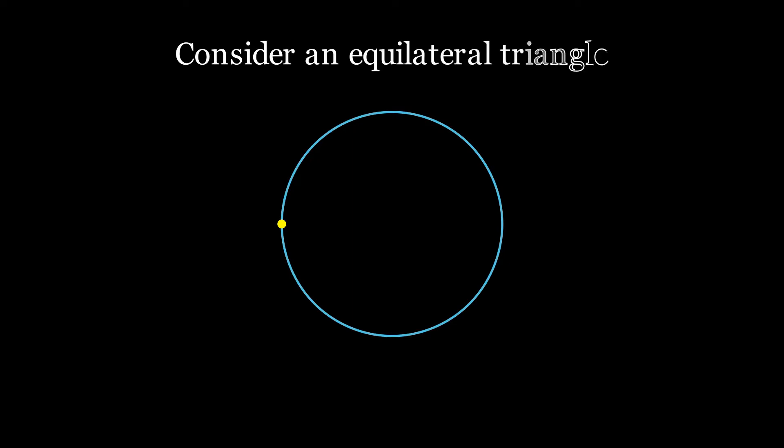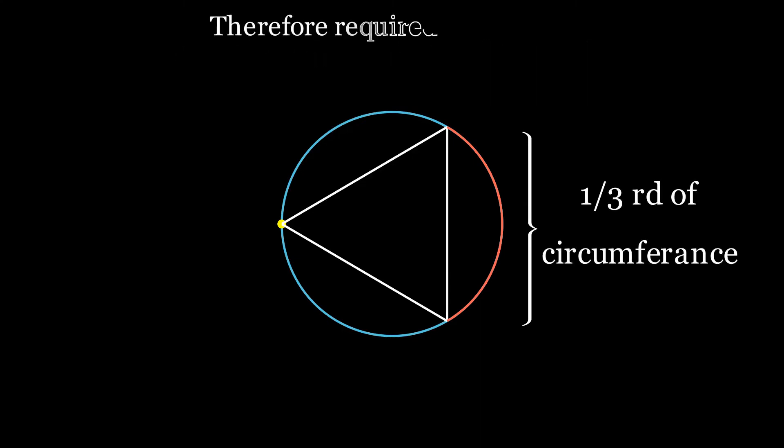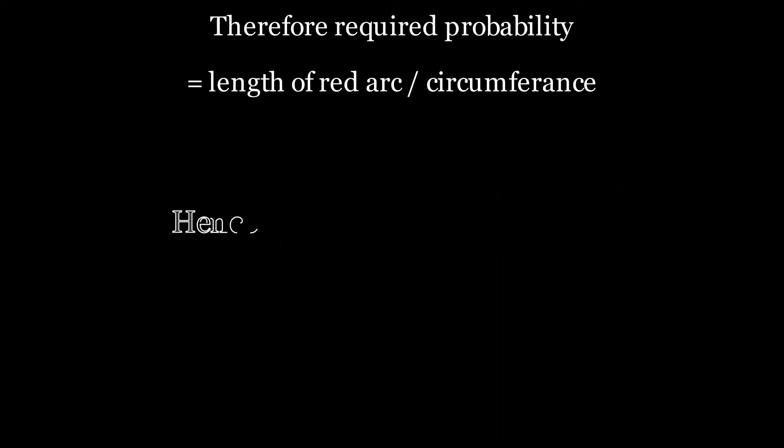You will notice that the arc in red represents the chords whose lengths are greater than the side of an equilateral triangle. Hence the probability is the length of the arc in red divided by the circumference, and the probability is 1 by 3.